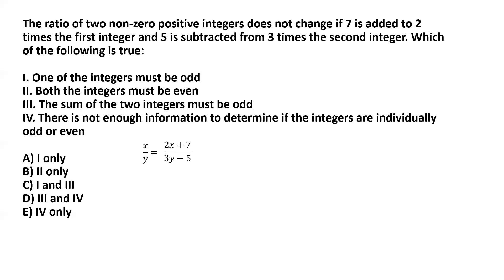If we cross multiply we get 3xy minus 5x equals 2xy plus 7y. Bringing 2xy to the left hand side, we are left with xy minus 5x equals 7y. We can take x common so we have x multiplied by y minus 5 on the left hand side and 7y on the right hand side.